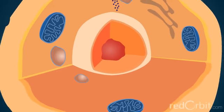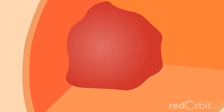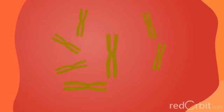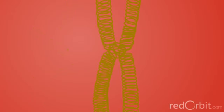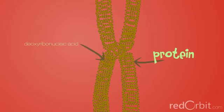Now let's explore chromosomes. Chromosomes are thread-like structures located inside the nucleus of animal and plant cells. Each chromosome is made of protein and a single molecule of deoxyribonucleic acid, or DNA.